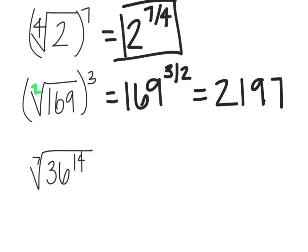Again, if you wanted to, you could type this in the calculator, and it would give you the answer 2197. You could try that with 2 to the 7 fourths if you wanted to. And if you type that in, then it's going to give you 3.363. So this one you could see is not going to be a pretty number.